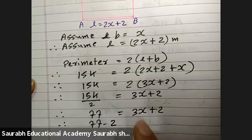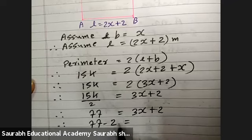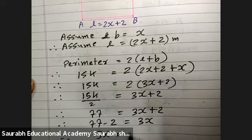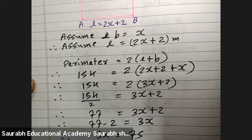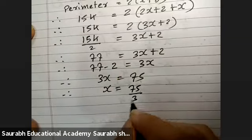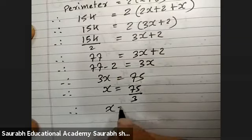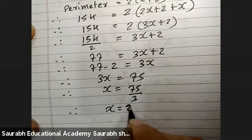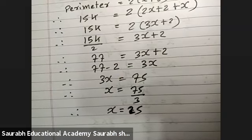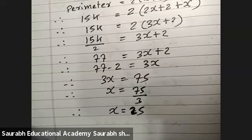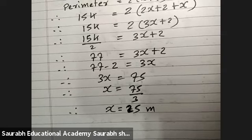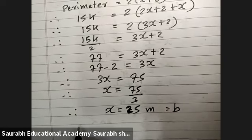77 minus 2, taking 2 on the left hand side. Therefore, 3x equals 75, x equals 75 by 3, that is 25. x equals 25 meters, and it is your breadth.